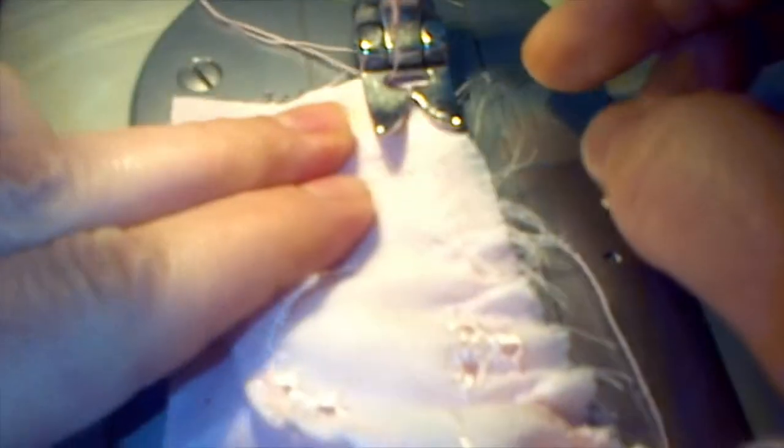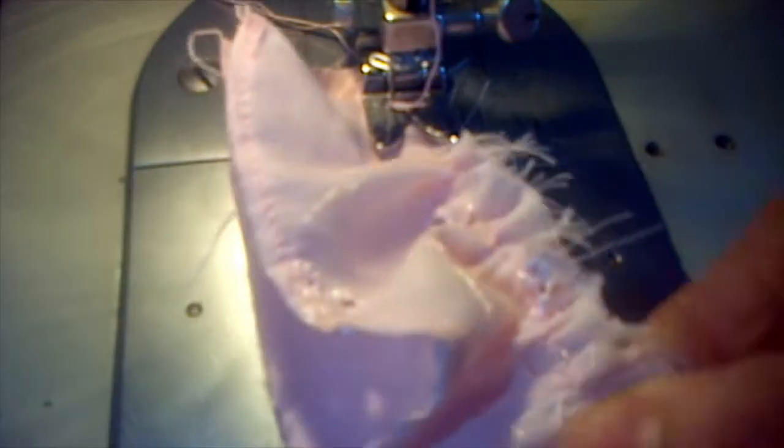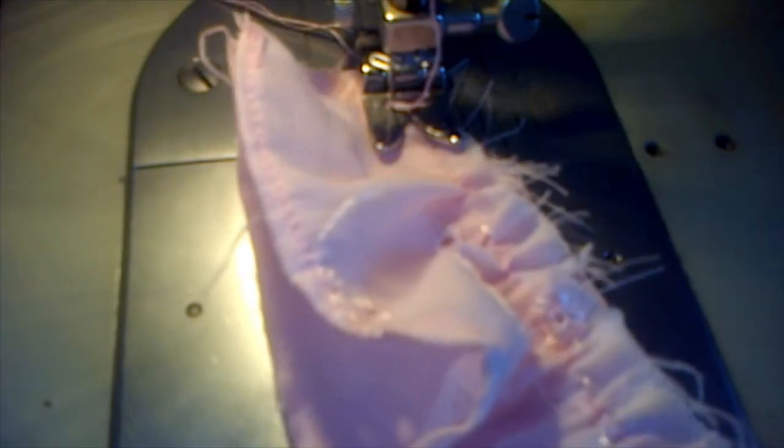Now attach this gathered strip to one and a half inch wide neckband. Leave a little bit space for seam allowance at the beginning and at the end. First set the gathering nicely then run a stitch over it.